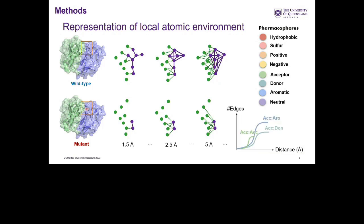This process yields a cumulative distribution of different edge types — that is, different pairs of pharmacophores such as acceptor-acceptor, acceptor-aromatic, and so on — across different distance thresholds.